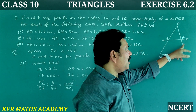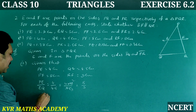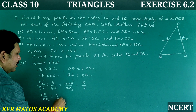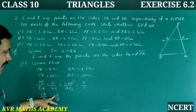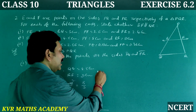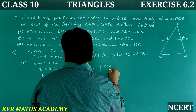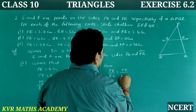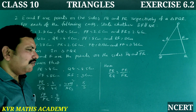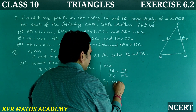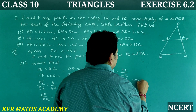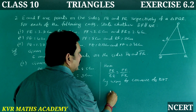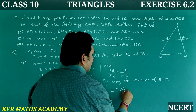PF by FR is also 8 by 9. Since PE by EQ is equal to PF by FR, by the Converse of the Basic Proportionality Theorem, EF is parallel to QR.